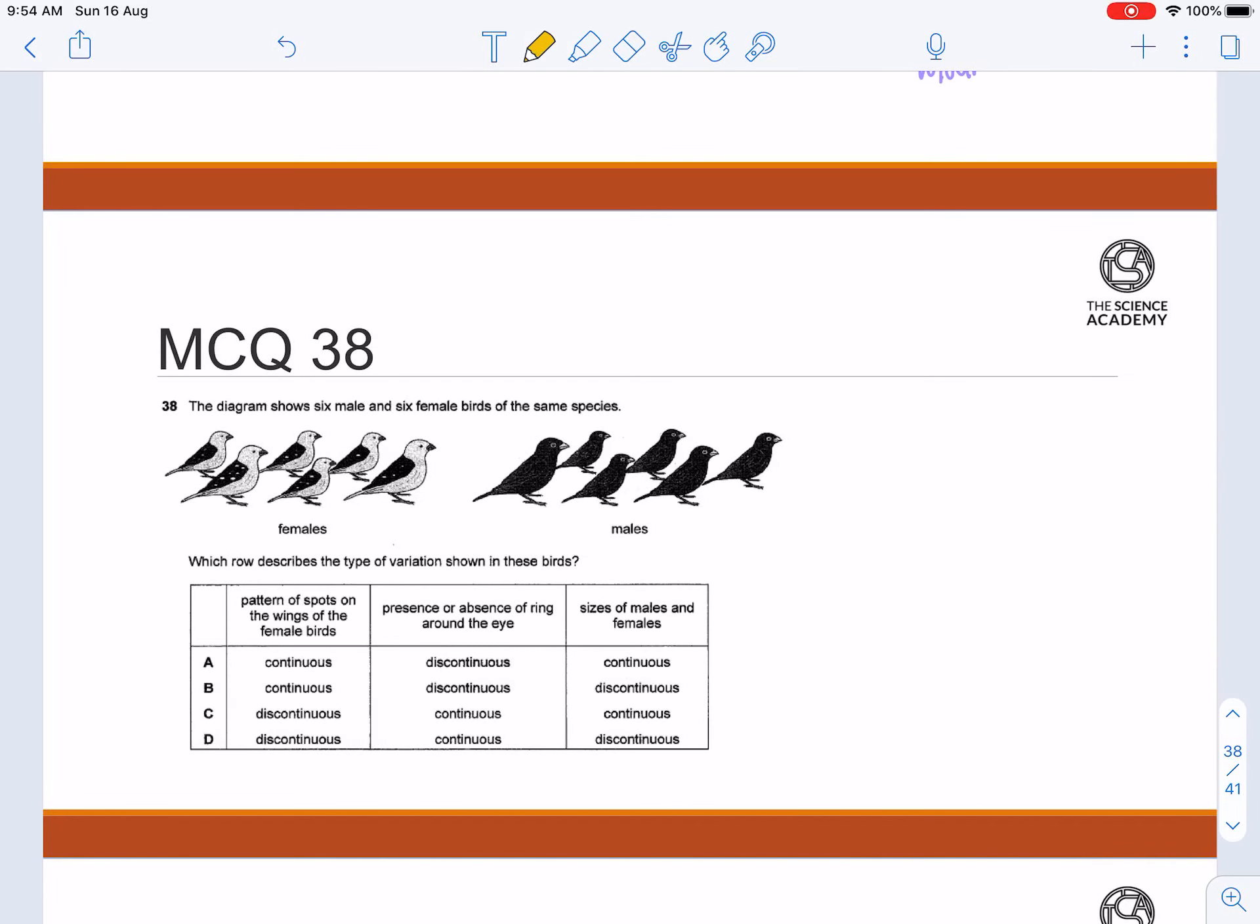Now let's move on to MCQ question 38. The diagram shows 6 males and 6 female birds of the same species. Which row describes the type of variation shown in these birds?